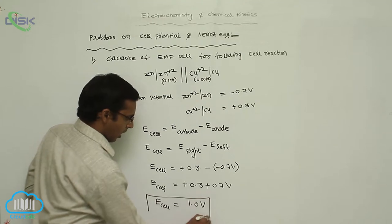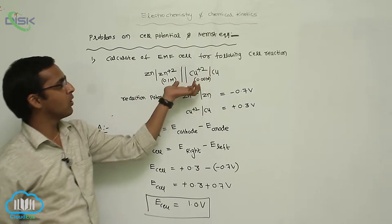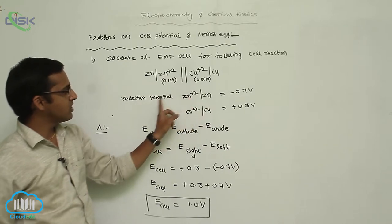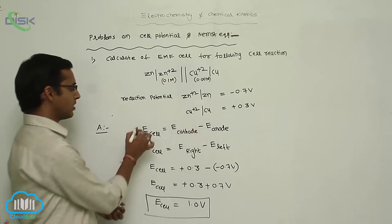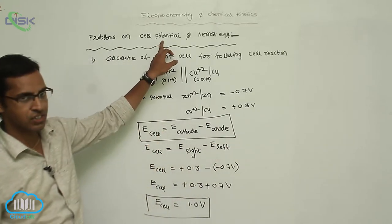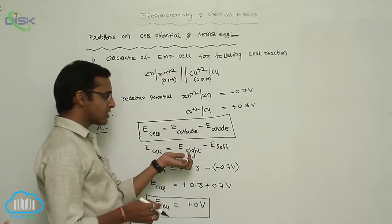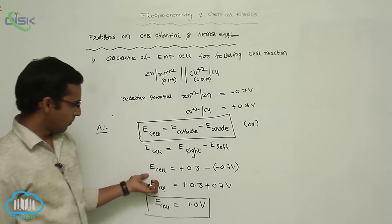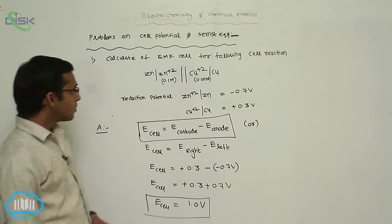The final answer is E_cell equals 1.0 volt. This is the calculated EMF of the cell for the given cell reaction. The given conditions were the reduction potential values of zinc metal and copper metal, and using the equation E_cathode minus E_anode, the final answer is E_cell equal to 1.0 volt.